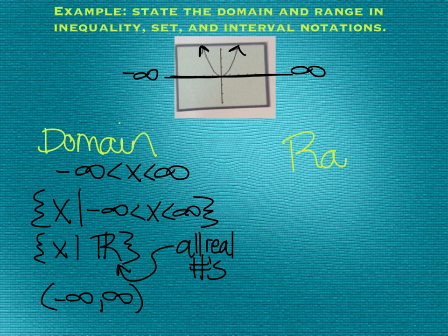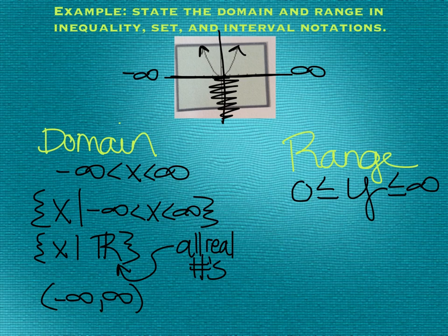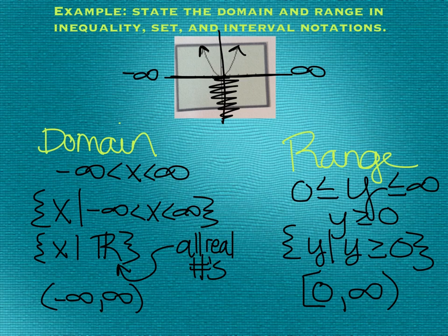For our range, we are looking at the y values now. On the y-axis, there is no graph below y equals zero. Our lowest y value is zero, and the function does touch zero, so we're going to say less than or equal to y, or y is greater than or equal to zero. In set notation: y given that y is greater than or equal to zero. In interval notation, zero is the lowest y can be, so it comes first; infinity is the highest y can be, so it goes second. We touch zero, so we have a hard bracket on that, and we never actually touch infinity, so a soft bracket on that.